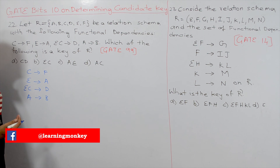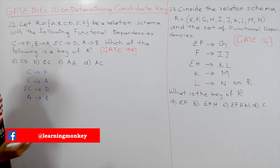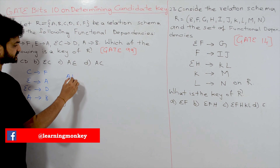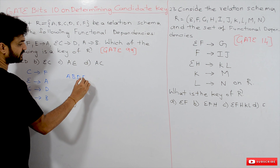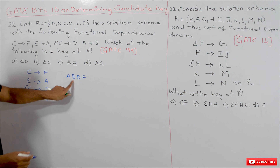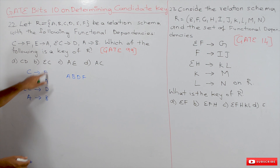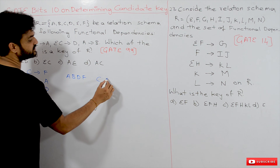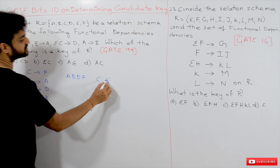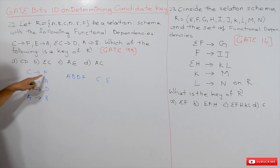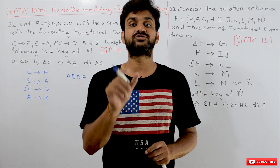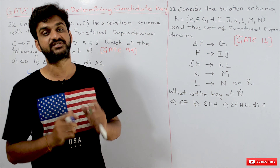The logic of the technique is: what are the attributes that are not there on the right-hand side of the given functional dependencies? The attributes present on the right-hand side are A, B, D, and F. The attributes not present on the right-hand side are C and E.